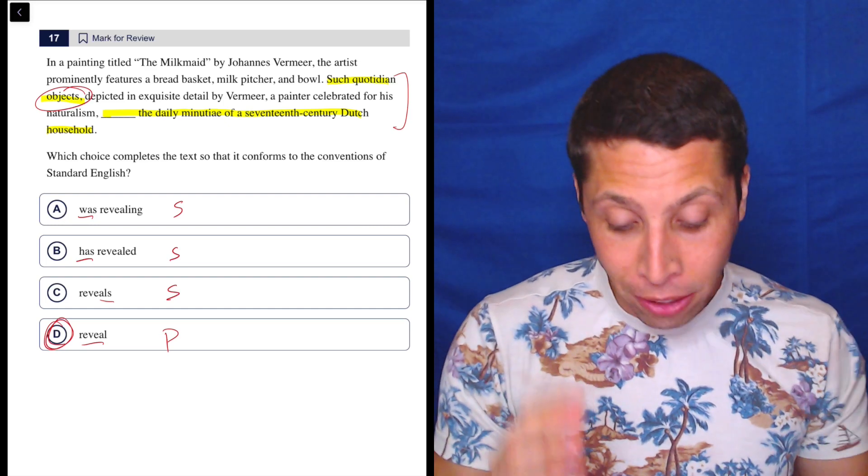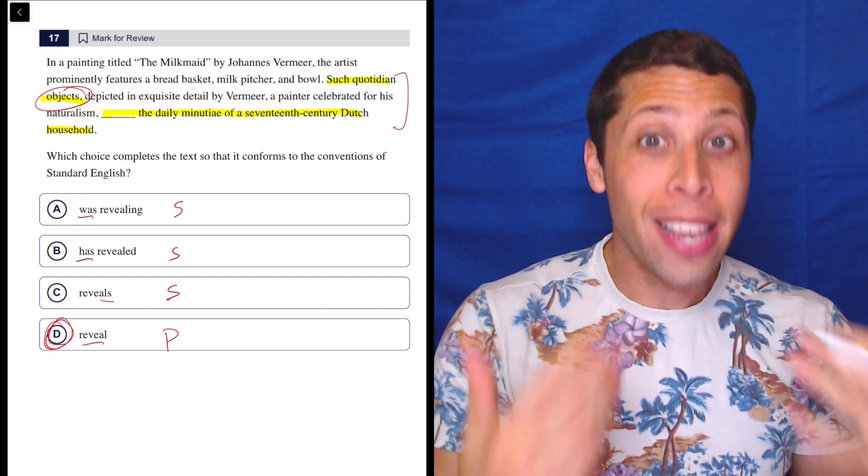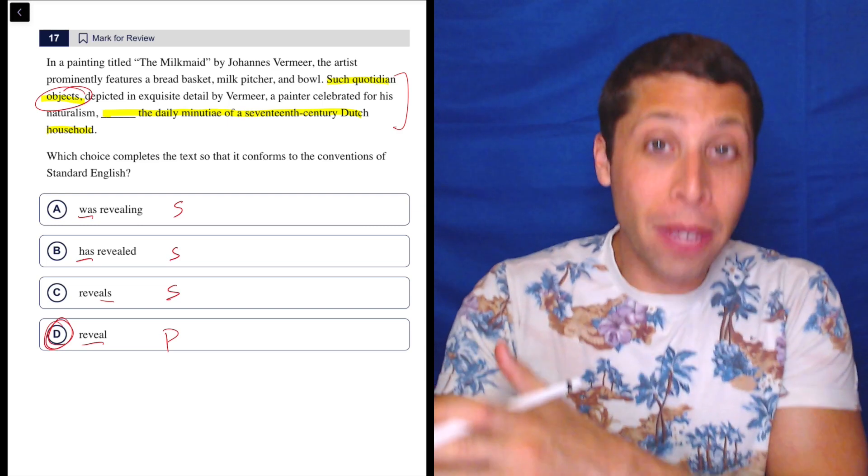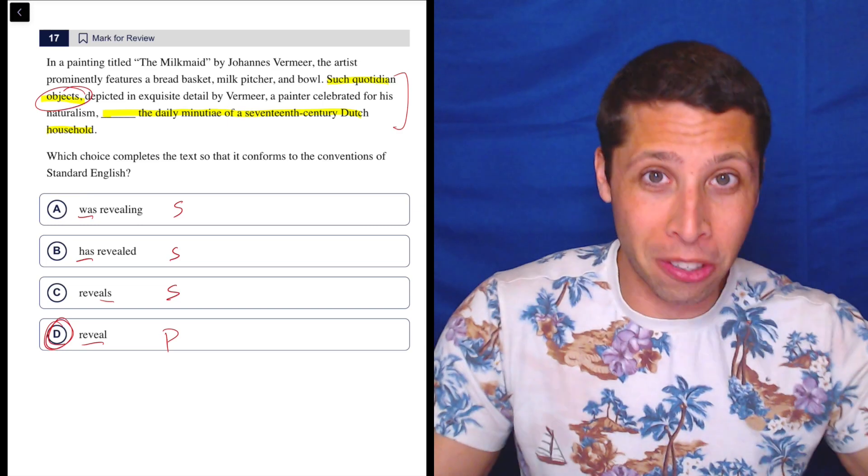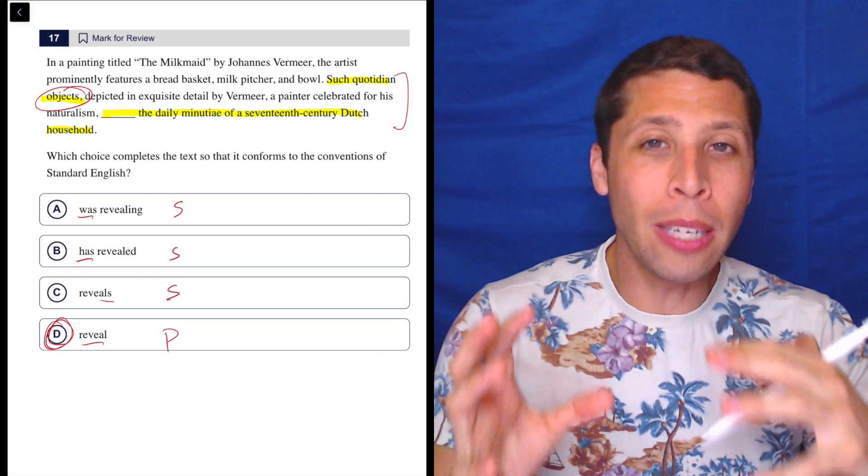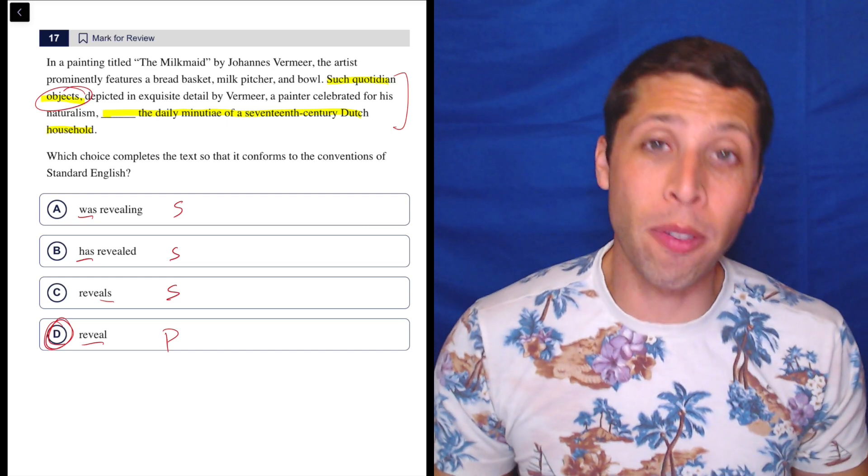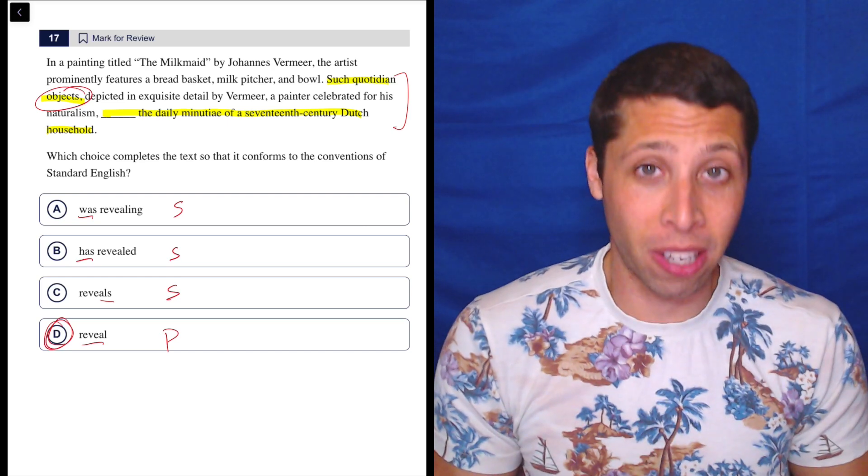Then, 'a painter celebrated for his naturalism' is an appositive, interrupting and describing Vermeer. So we have two descriptors here, but neither of them are really going to be part of the sentence. And so neither of them can contain the subject of the sentence.